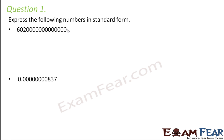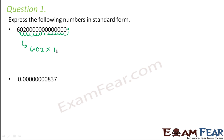Here you have a big number. The decimal point is here, and we need to shift it to where we get a decimal number less than 10. We shift it to get 6.02 into 10 to the power — counting the jumps: 1, 2, 3, 4, 5, 6, 7, 8, 9, 10, 11, 12, 13, 14, 15 — so this is 6.02 into 10 to the power 15.